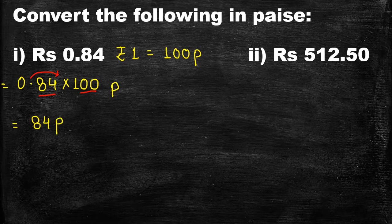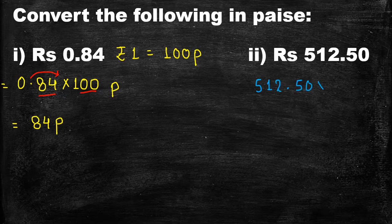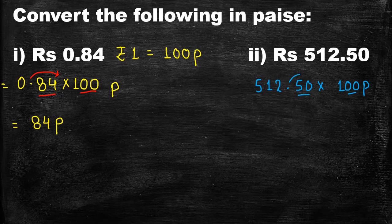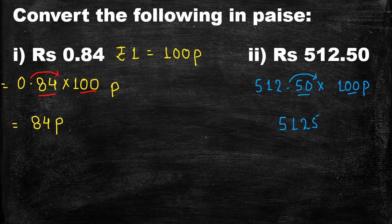In the next part, rupees 512.50 is given. So it will be equal to 512.50 multiplied by 100 paise. Again, two digits are after the decimal and two zeros are in 100, so the decimal shifts two places to the right and gets eliminated. The product will be 51,250 paise.